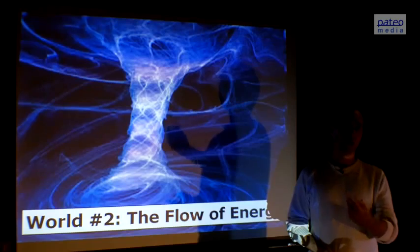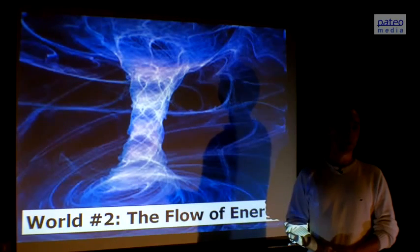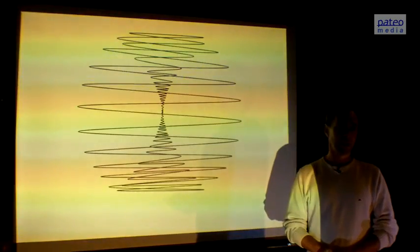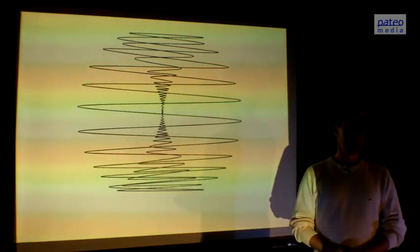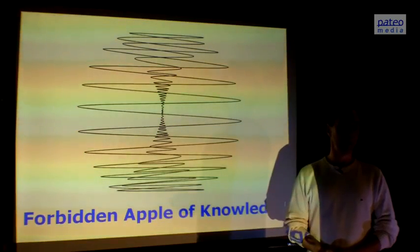It spirals to a core and then it goes out again. This is the dynamics in the flow world, the spiraling dynamics. Here we see the whole dynamics, and this is the forbidden apple of knowledge, as also mentioned in the Bible.